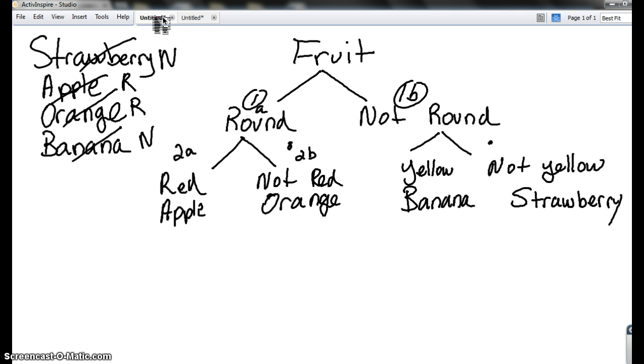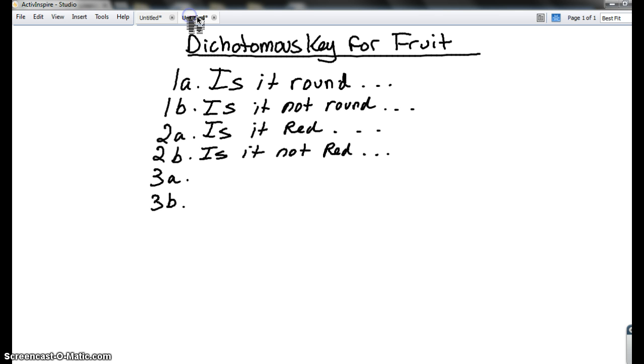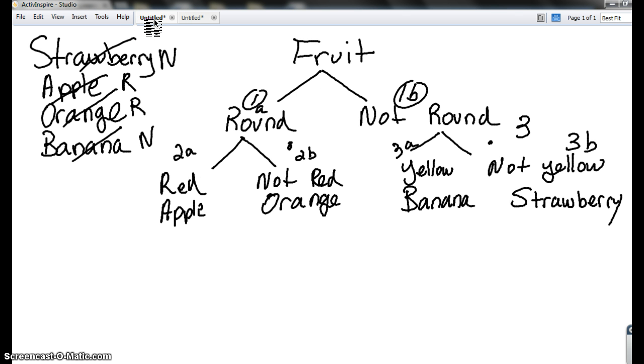Alright. We go back to our flowchart again. And question 3 is going to come from where? Yellow and not yellow. So, we're going to go 3A, 3B. Back to our flow chart. Is it yellow? And the other one? It is not yellow. Nice job. Okay. So, now that we have that done.